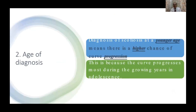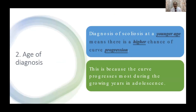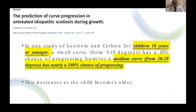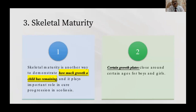The second factor is age at the time of diagnosis. Literature confirms that diagnosis of scoliosis at a younger age means higher chances of curve progression. An article by Lonstein and Carlson states that children 10 years or younger with a medium curve of 20 to 29 degrees have nearly 100% chances of curve progression.